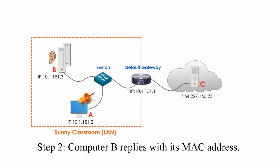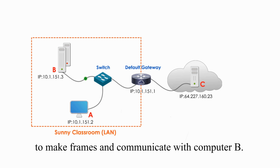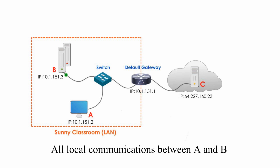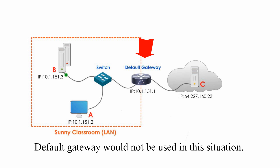Step 2: Computer B replies with its MAC address. Step 3: Computer A then uses computer B's MAC address to make frames and communicate with computer B. All local communication between A and B involves a layer 2 device — a switch. The default gateway would not be used in this situation.